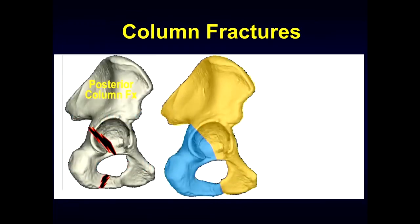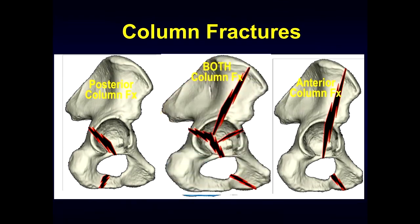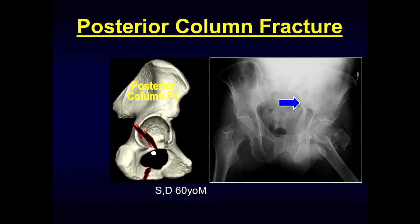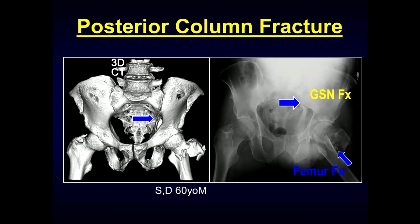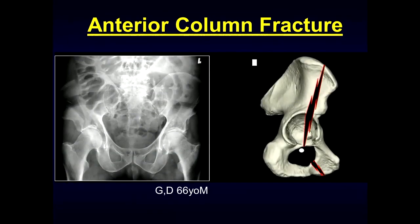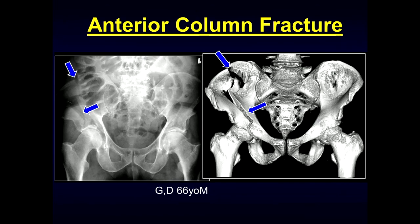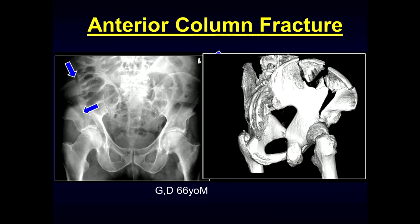Here is a posterior column fracture extending up to the sciatic notch, involving the obturator ring. The anterior column fracture extends up into the iliac wing. In this example of a posterior column fracture, we can see it extends upward into the sciatic notch, and this patient also has a proximal femoral fracture. At CT, the fracture extending to the sciatic notch is also well demonstrated. Here is an anterior column fracture with extension up into the iliac bone extending down into the acetabulum, also shown sagittally.